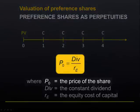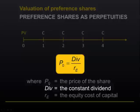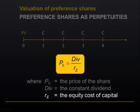P0 is the price of the share today. Div is the constant dividend. And RE is the equity cost of capital, or the required rate of return.